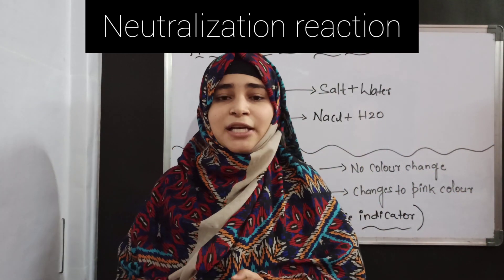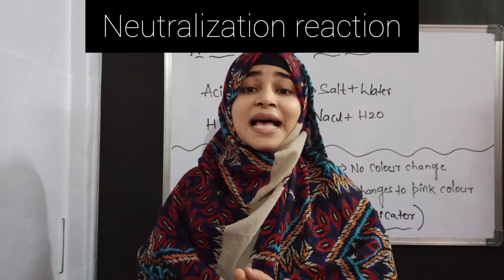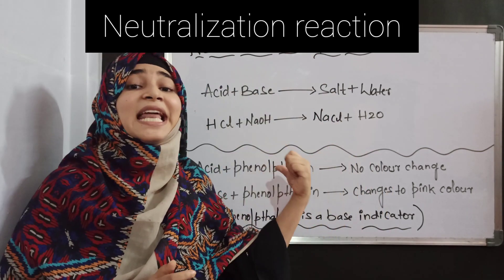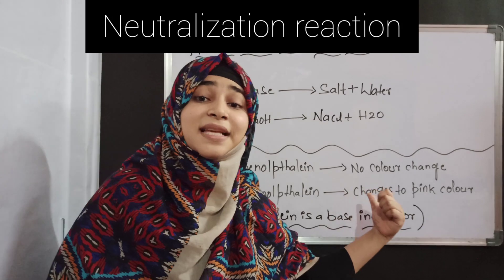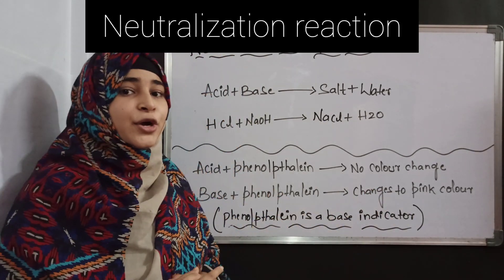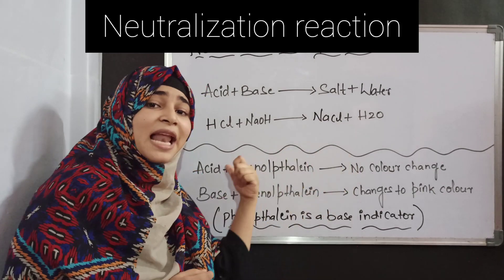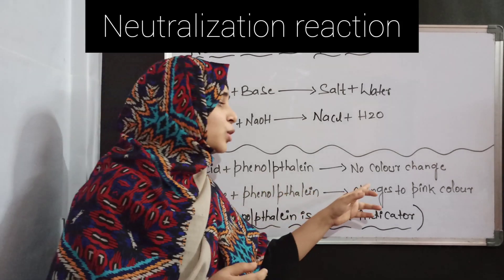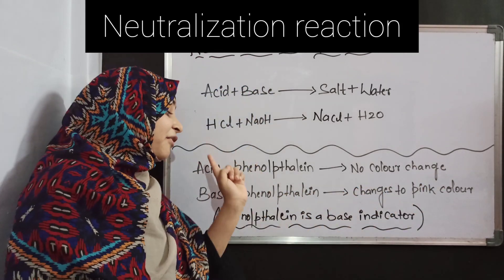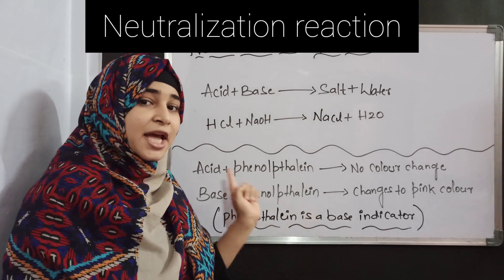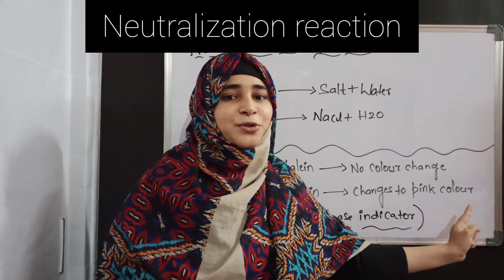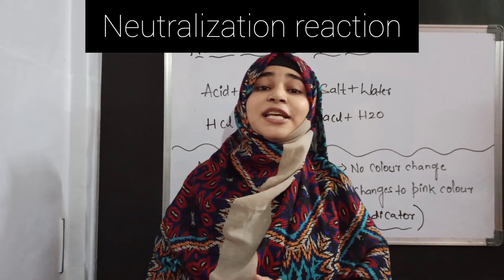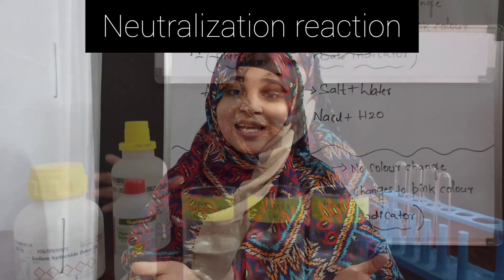If I give you two solutions and ask you which is the acid and which is the base, how can you find out? We have an indicator called phenolphthalein solution. It is a base indicator. If I add phenolphthalein solution into the base, it will change its color to pink. So phenolphthalein solution is a base indicator. Let us now do the neutralization reaction practically.